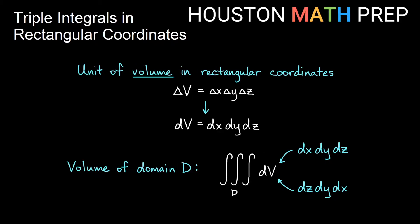We can do a similar thing with volume and triple integrals, just like we did with area and double integrals in rectangular coordinates. Instead of a unit of area, we'll be thinking of a unit of volume — a rectangular box with length, width, and height. The volume of this box would be some amount of x times some amount of y times some amount of z. If we cram many more cube-like shapes into a region in three-dimensional space, they get smaller and smaller as we fill it with more boxes.